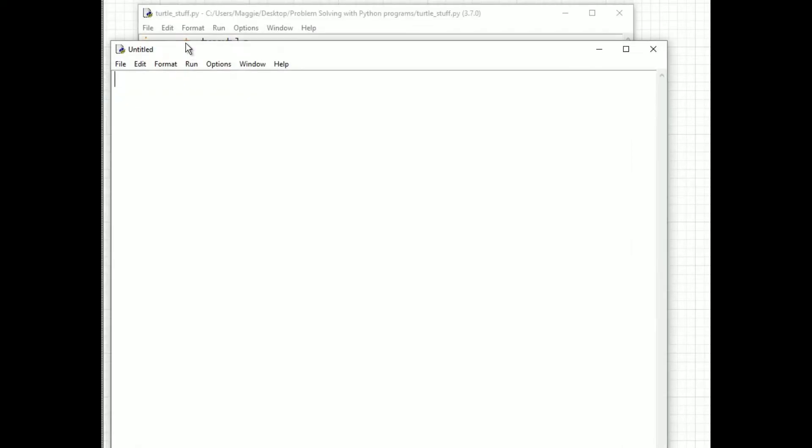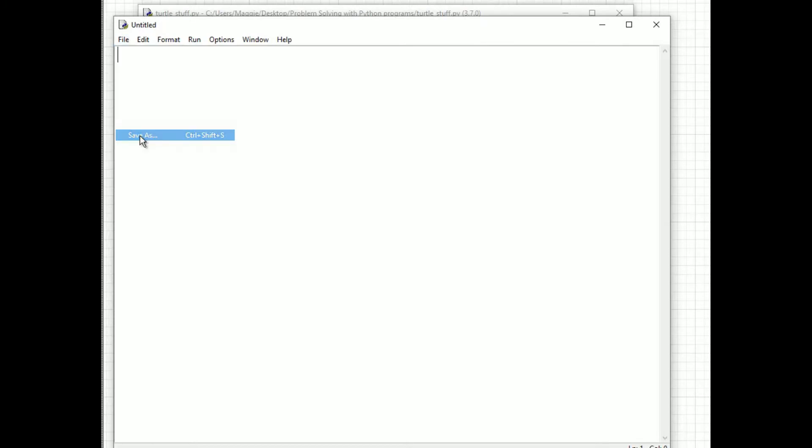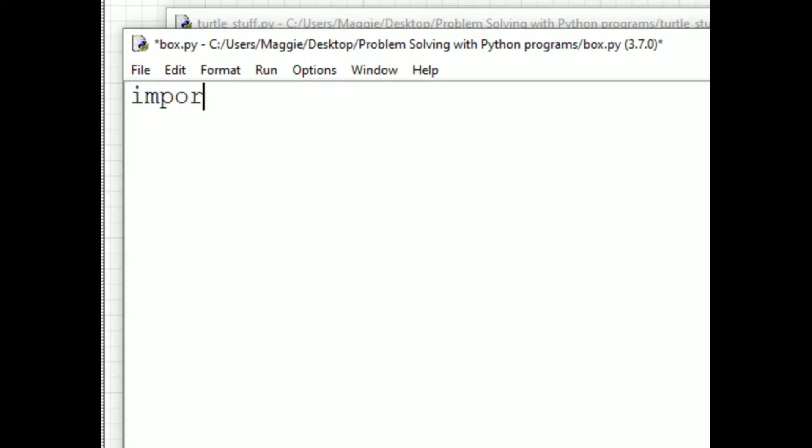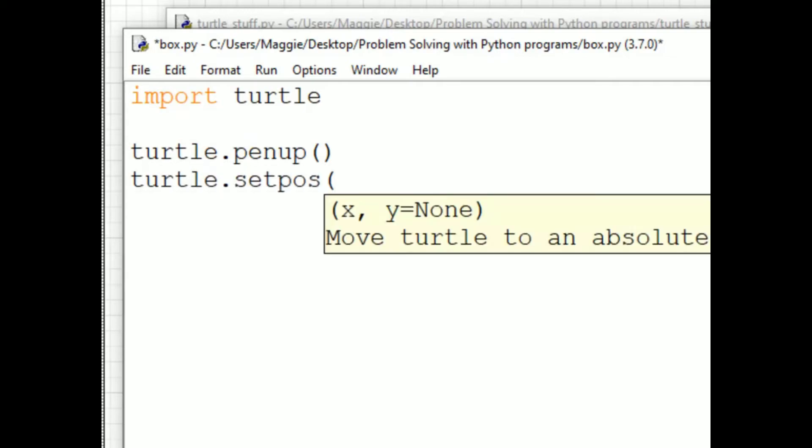Okay, so I'm going to create a new file and call it box. Now I'm going to write import turtle at the top. And what I want to do is start over at negative 120, negative 120. To do that, I'm going to write turtle.penup(). So the turtle doesn't draw while I move it. And then I'm going to write turtle.setpos and put the coordinates after that in parentheses.